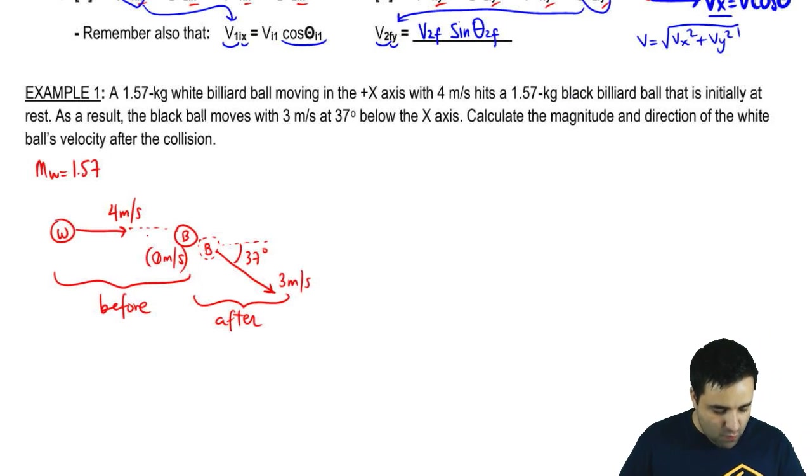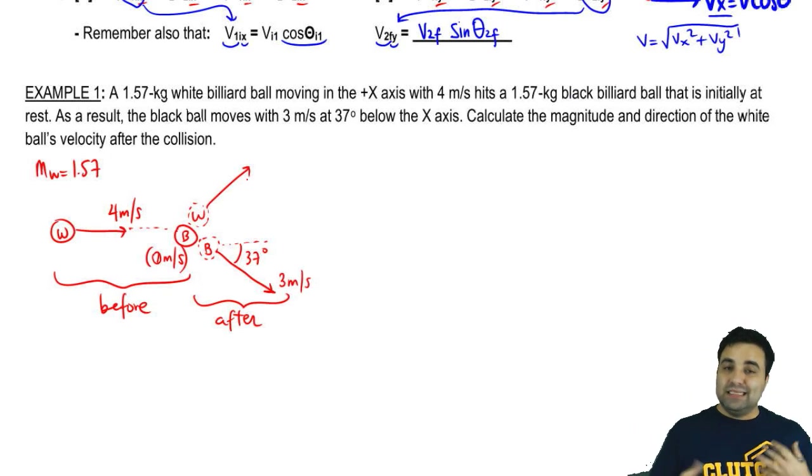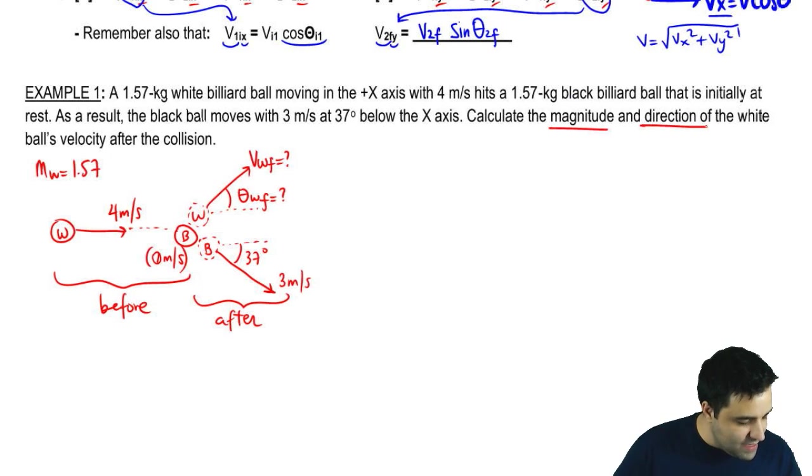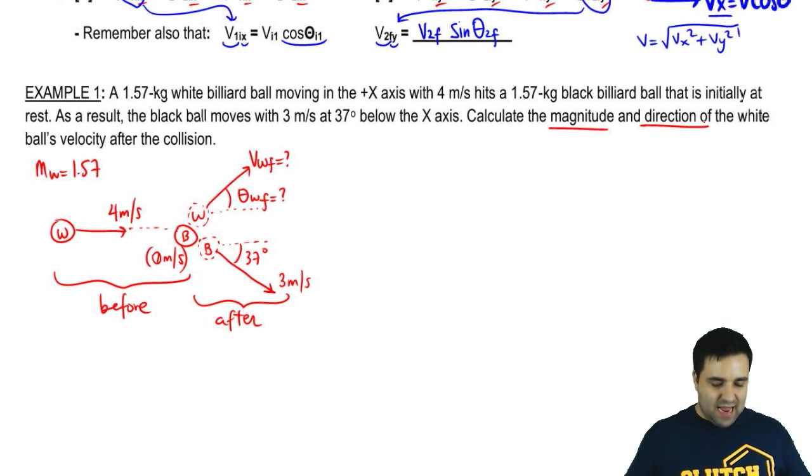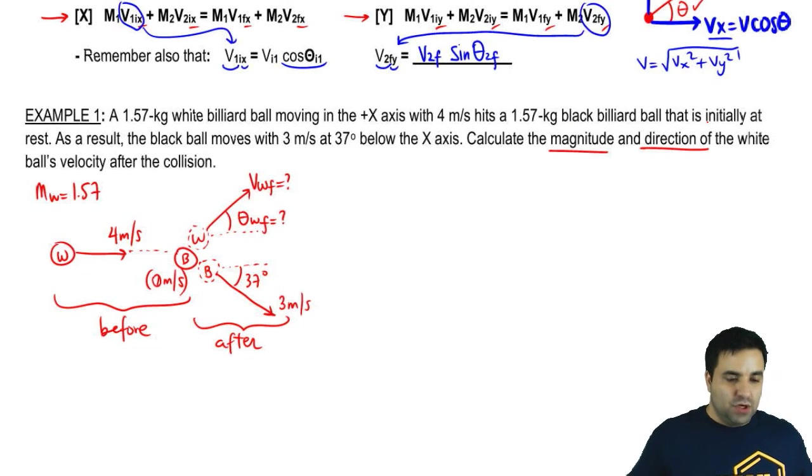Now, which way would the white ball go? If the black ball goes down, I hope you're thinking that the white ball would go somewhere in this direction. Now, it doesn't mean it goes at the same speed. It doesn't mean it goes with 37 degrees. In fact, usually it doesn't turn out to be that nice. But that's what we want to know. I want to know what is V white final. And I want to know what is theta white final. In other words, what is the magnitude and the direction of the white ball's velocity after? And we're going to write the two momentum equations, one for the x, one for the y, plug in a bunch of numbers.